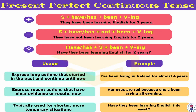Quick review of the present perfect continuous tense: subject plus have or has, plus been, plus the verb and -ing — the present participle. To say no, you put not in between have/has and been. For a question, you switch the subject and have/has. You use it to talk about long actions that started in the past and continue until now. Example: 'I have been living in Ireland for almost four years' — it started four years ago and you are still living in Ireland today. Also to express recent actions with clear evidence now: 'Her eyes are red because she's been crying all evening.'